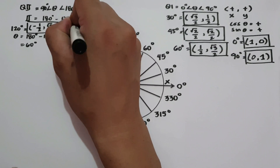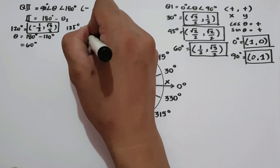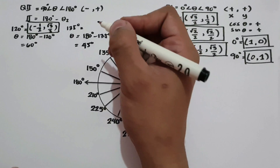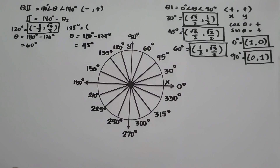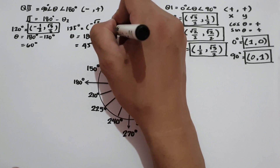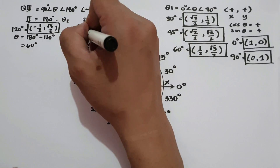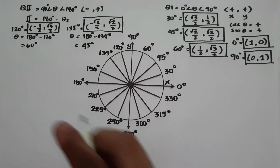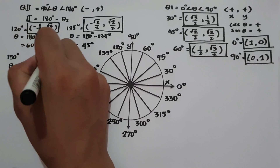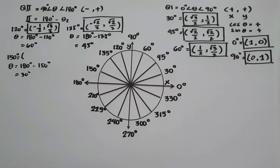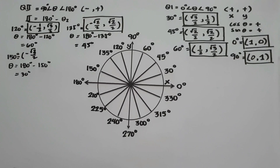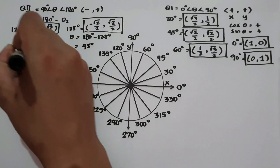How about 135 degrees? The reference angle is 180 minus 135 degrees, which is 45 degrees. The coordinates are: cosine 45 in quadrant 2 is negative square root of 2 over 2, and sine 45 in quadrant 2 is square root of 2 over 2 — the sine is positive. This will be the coordinates of 135 degrees. How about 150 degrees? The reference angle is 180 minus 150, which is 30 degrees. The coordinates of 150 degrees are: cosine 30 in quadrant 2 is negative square root of 3 over 2, and sine 30 in quadrant 2 is 1 half.